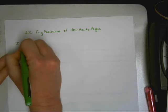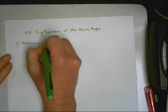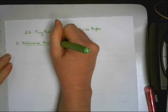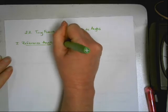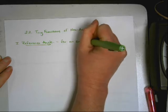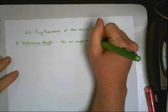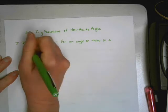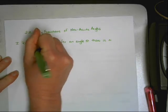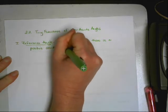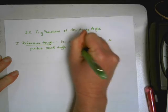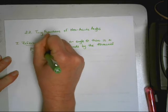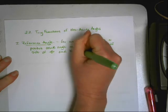So the first thing that we need to talk about are reference angles, and I've kind of talked about them briefly. We're just going to make sure everybody understands exactly what a reference angle is. So for an angle theta, there is a positive acute angle made by the terminal side of theta and the x-axis.